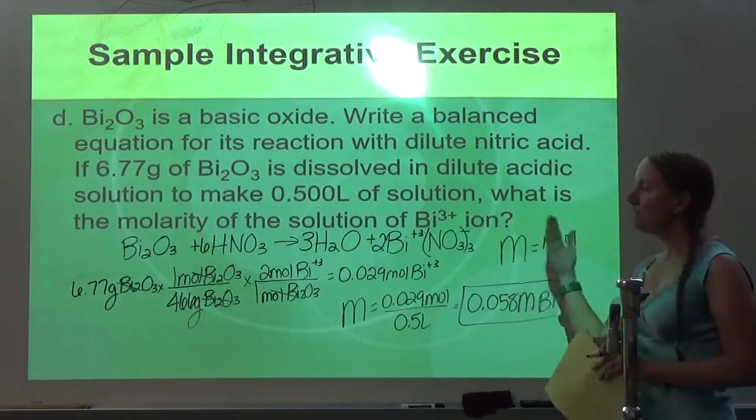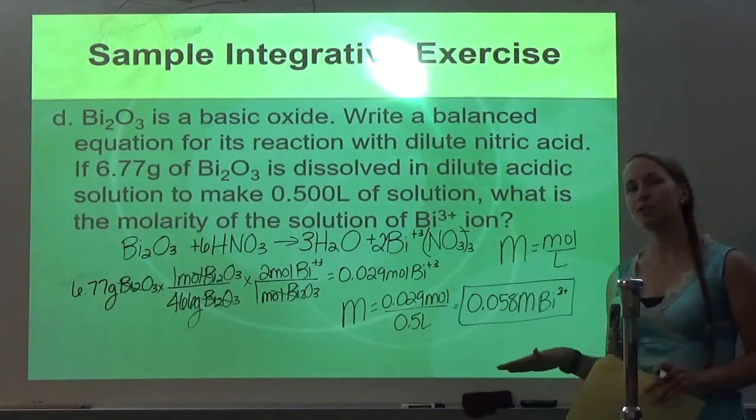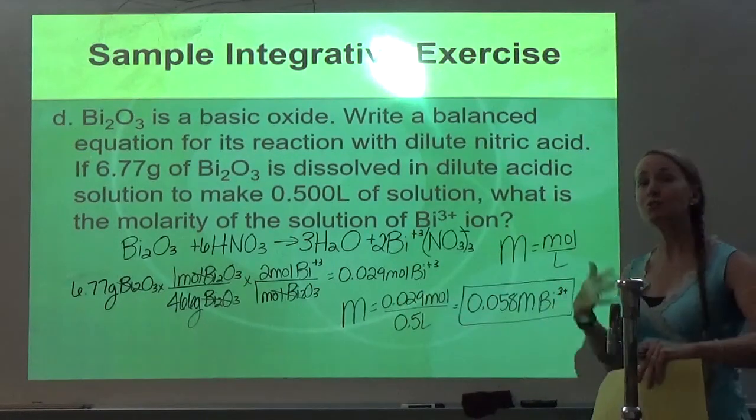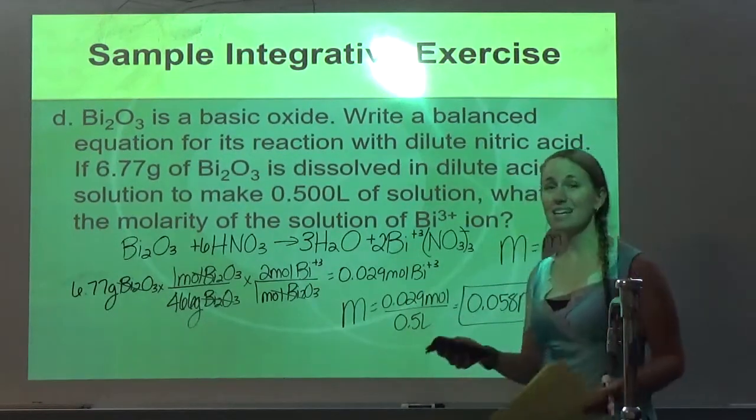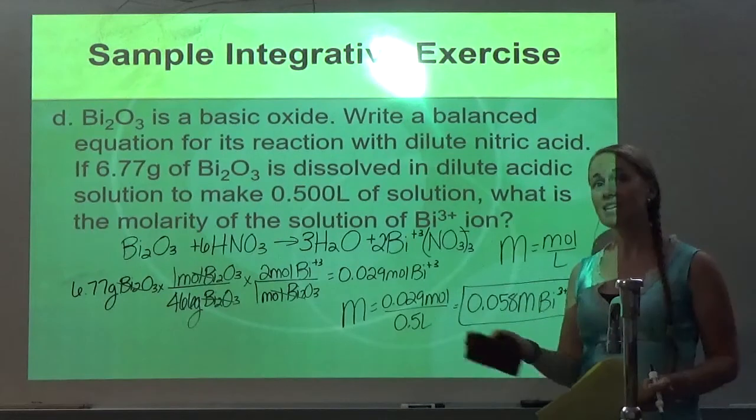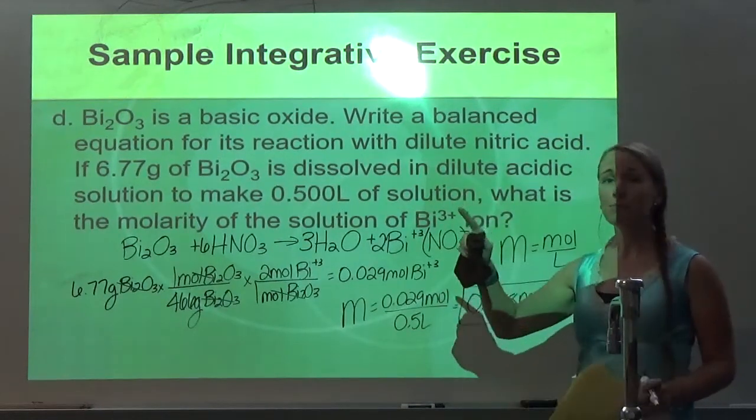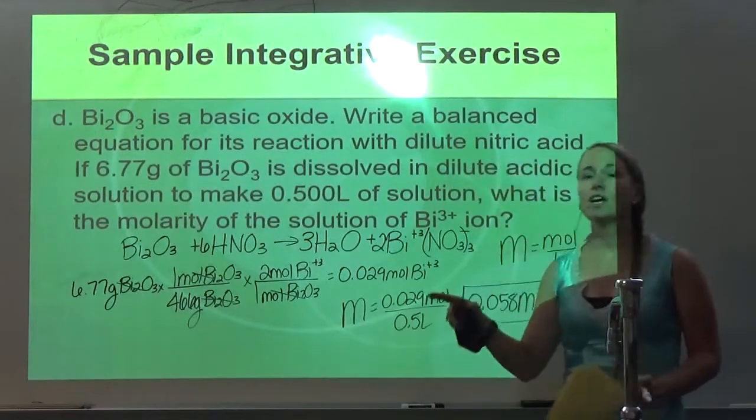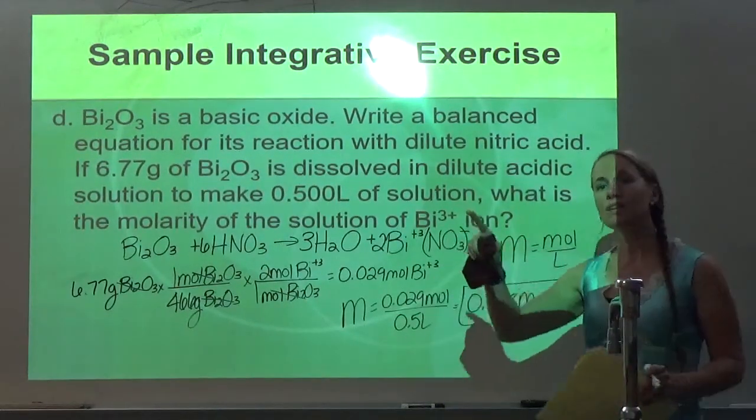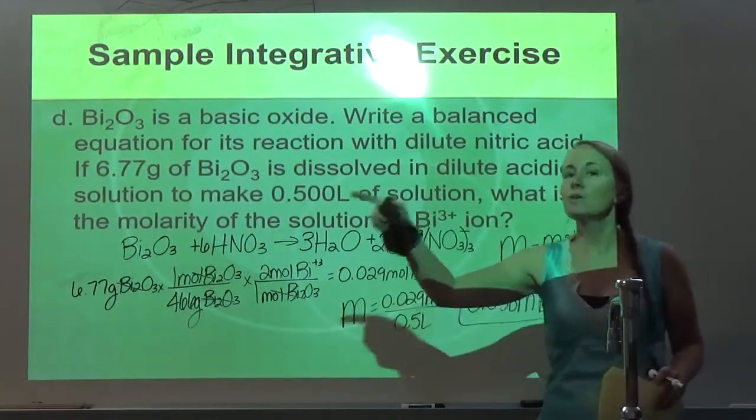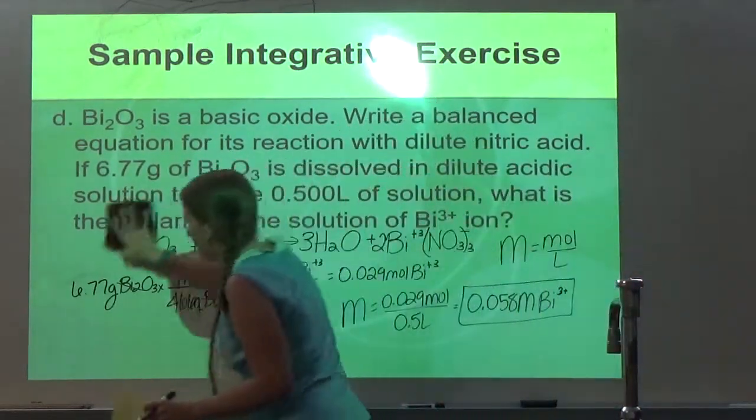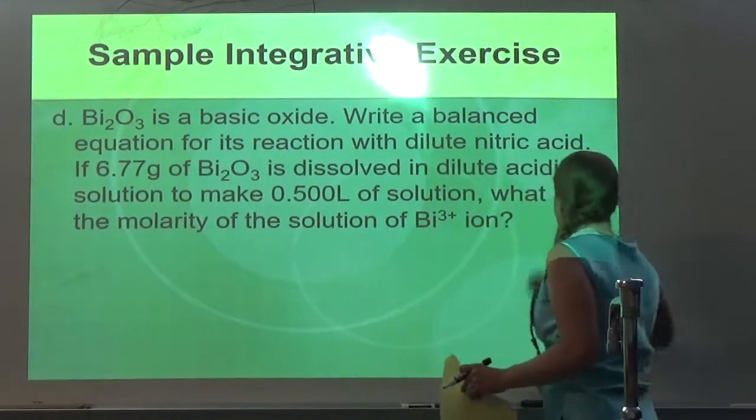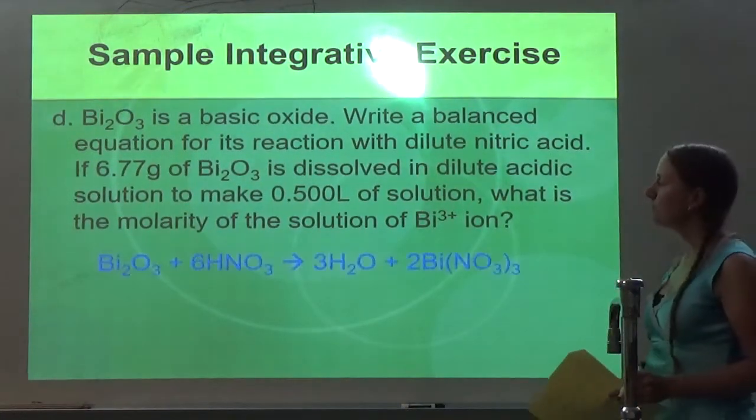So see, even though we're not even talking about stoichiometry in this chapter, it can always come back in. That's what the free response questions, like I said, end up being like on the AP exam. They may start talking about bismuth, but you're going to do stoichiometry with it. You're going to do an equilibrium problem with it. You may do electron configuration with it. You may do thermochem with it. You can do electrochem with it. Like, it just goes all over the place. So you may hate the sample integrative, but they're good practice.